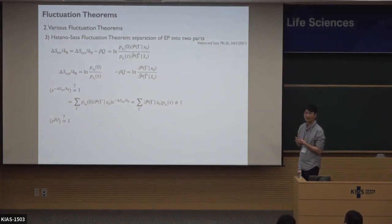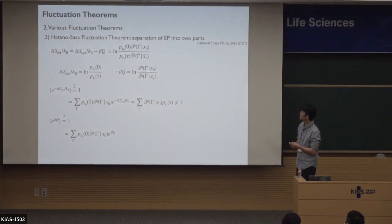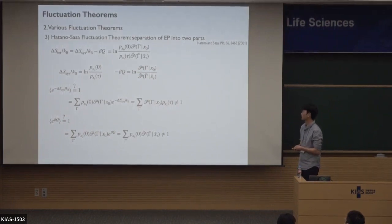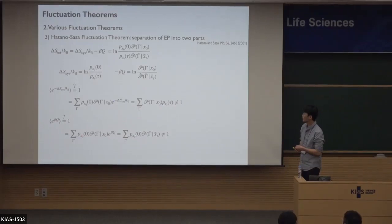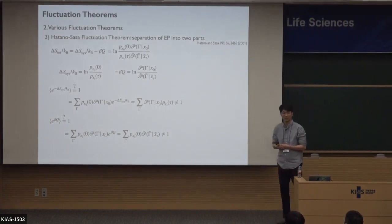Any questions? Now for the second part: by definition, it can be written with an exponential part and a path probability. Using the same equation, we plug it in and can show it becomes a certain form. This is also not the path probability, so the summation over this one is not a normalization condition — it is not equal to one. So the heat does not satisfy the fluctuation theorem either.